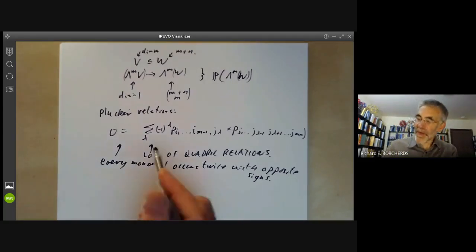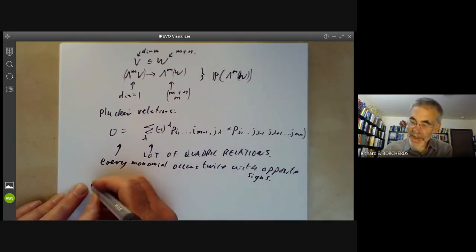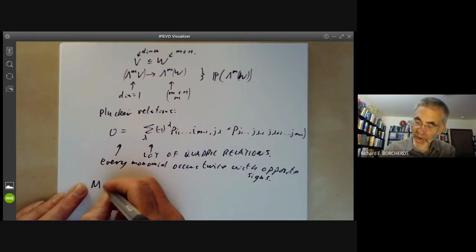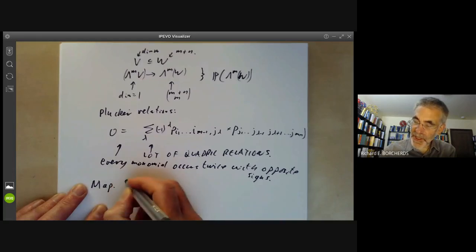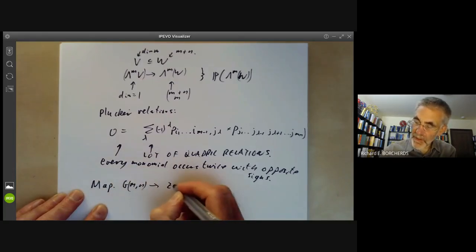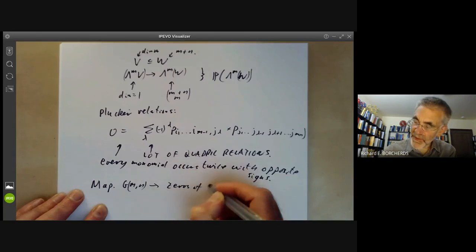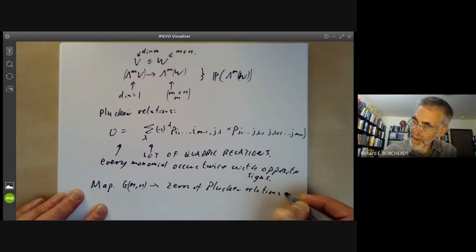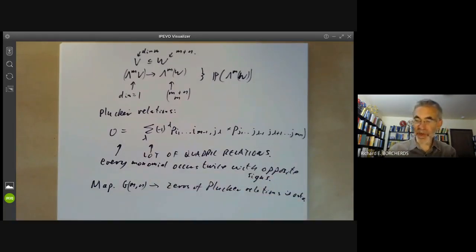Again, we can then check that these are all the relations you need. So we need that the map from GMN to the zeros of the Plucker relations is onto and I'll just very quickly sketch the proof of this.